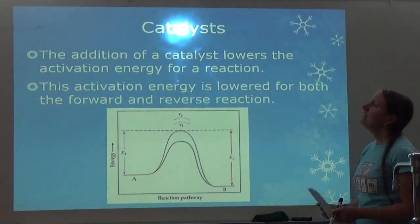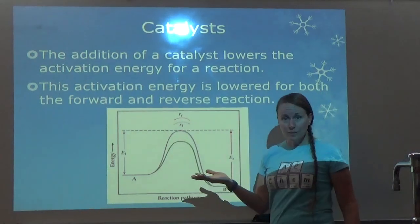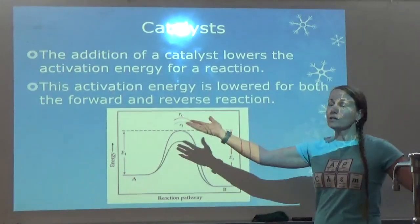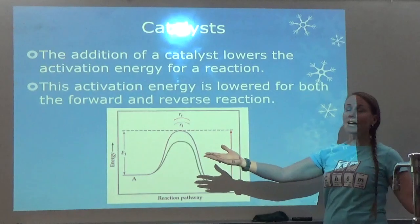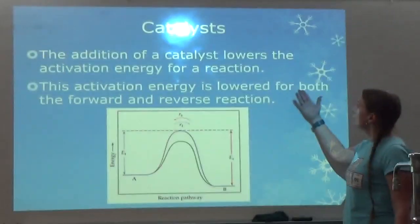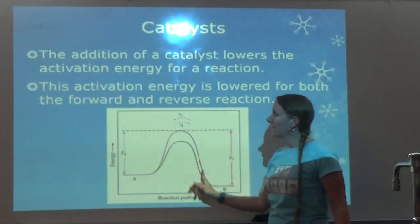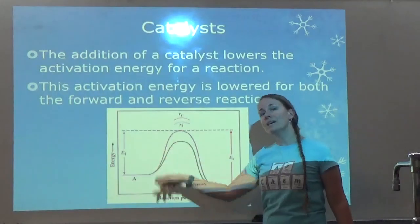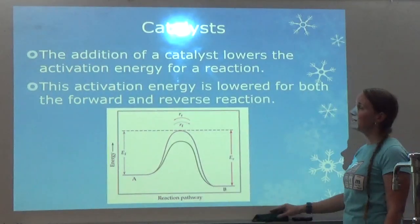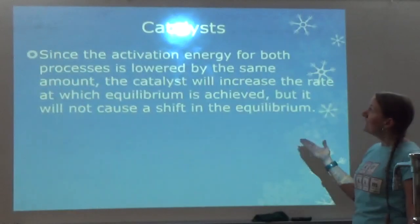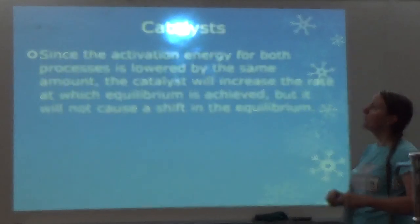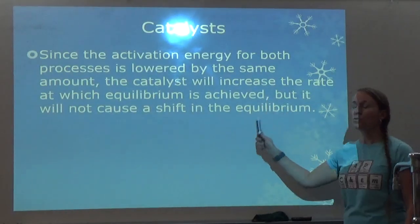The addition of a catalyst does change the mechanism, as we learned in Chapter 14, to lower activation energy and speed up the rate of the reaction. But the rate of the reaction doesn't affect your K value. This activation energy is lowered for both the forward and the reverse reaction, which is why equilibrium is not affected by a catalyst.